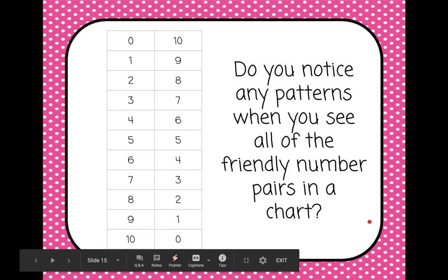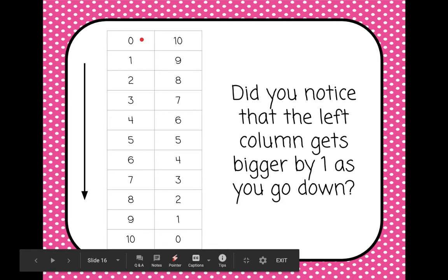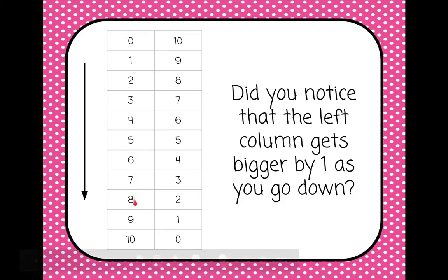Do you notice any patterns when you see all of the friendly numbers in a chart like this? I'm going to give you a moment — you can also pause the video if you need longer. Did you notice that in the left column, as you go down, the numbers get bigger by one each time? You're just counting up: zero, one, two, three, four, five, six, seven, eight, nine, ten.